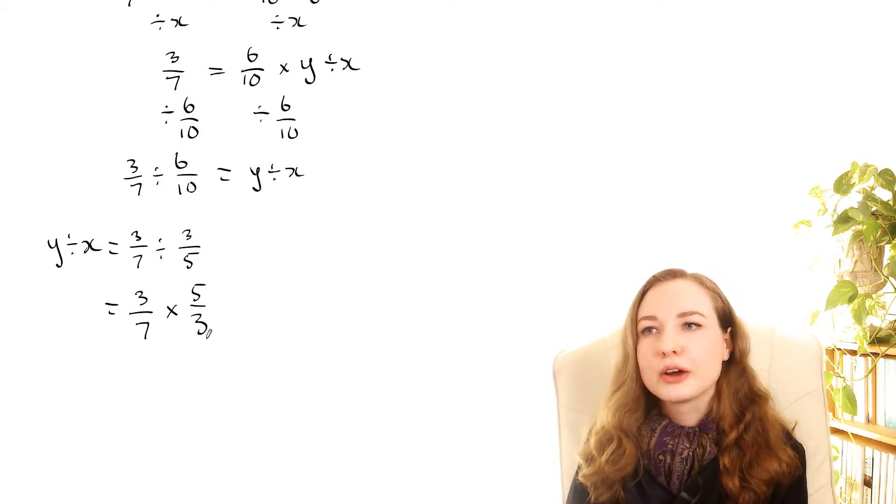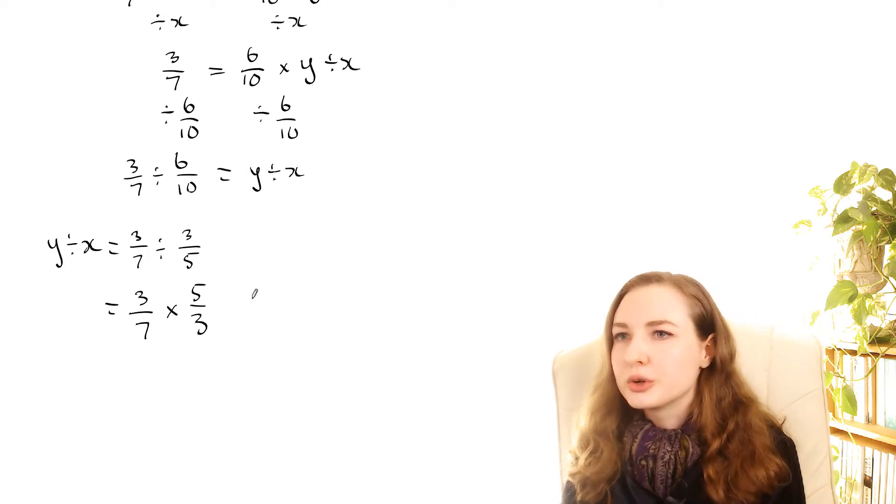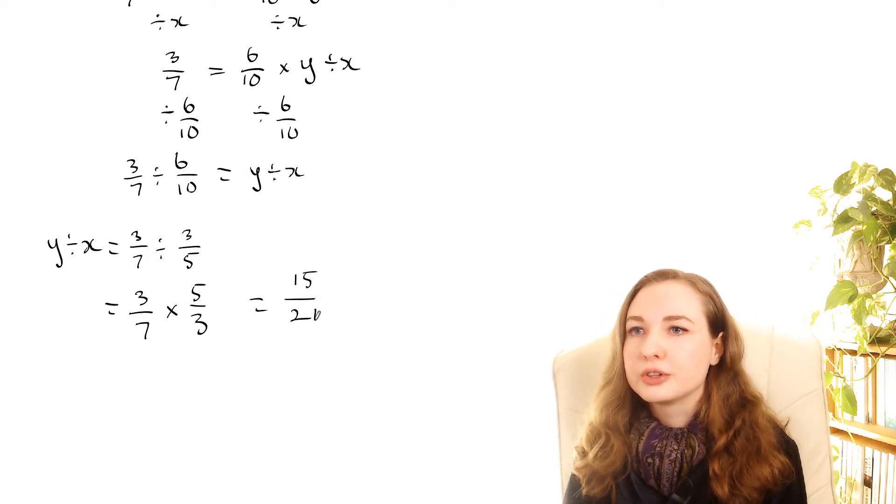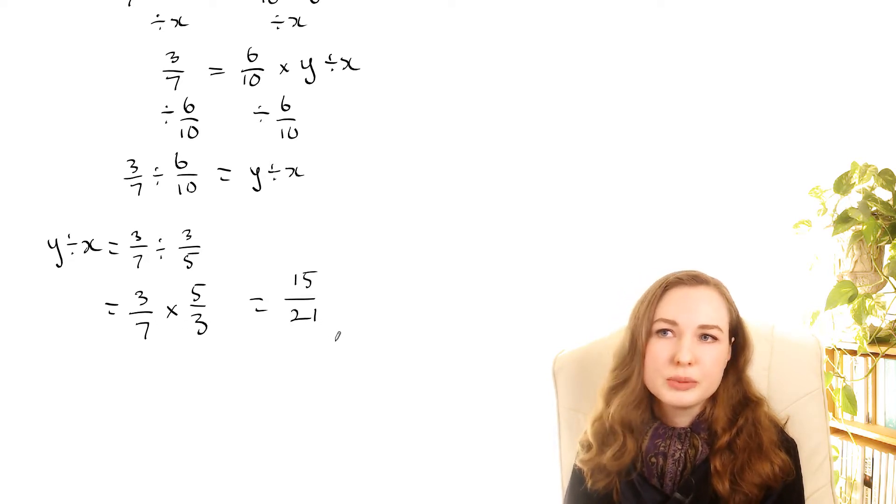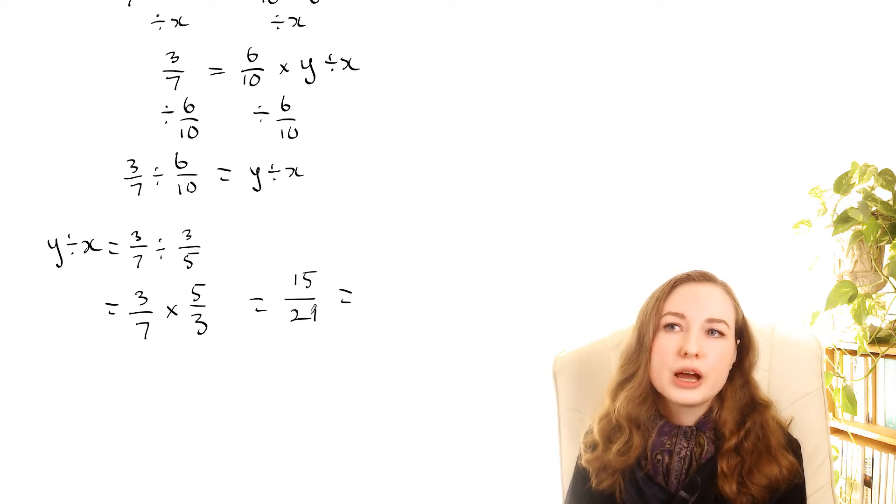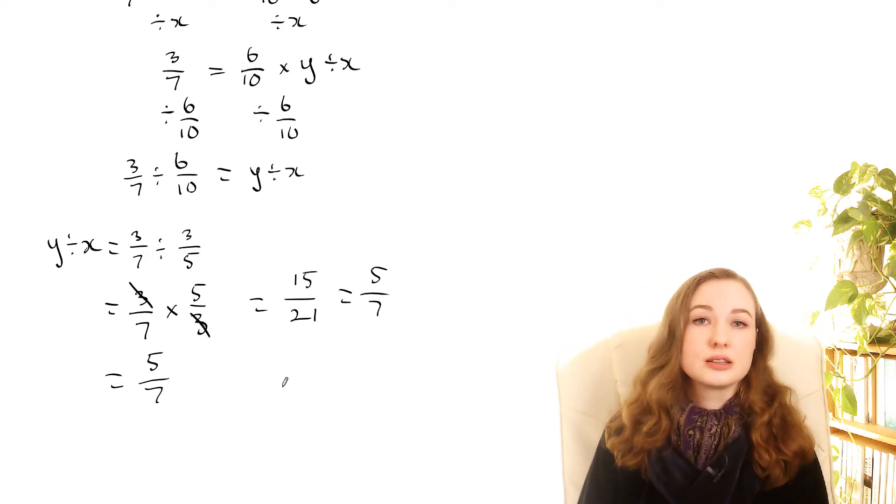And then you can just multiply across or because we've got these two 3s here you can just cancel them. So you know what I'll show you both ways. If you just multiply across you'll have 15 over 21. So 7 times 3 making 21. And then you have to simplify this. So you'd have to divide each one by 3. So you get 5 over 7. Or an easier way to do that is just to recognize that there's these two 3s here and we can just cancel them. So we just end up with 5 over 7. So that's the answer to that question.